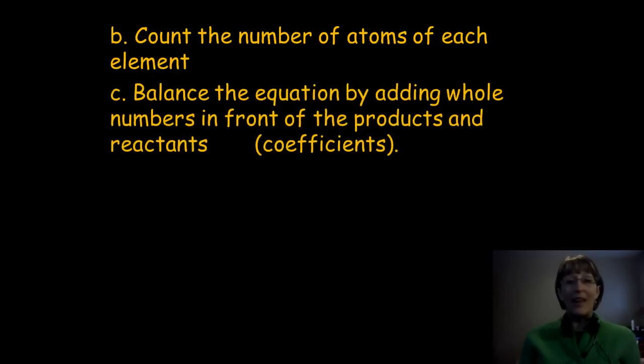Balance the equation by adding whole numbers in front of the products and reactants. You balance the equation by adding the big coefficients in front of the formula. Don't ever balance your equation by writing down or changing the little subscripts. You know, H2O is always H2O, that law of proportions, where there are always two H's for every one O in water. That's that proportion for water. If you mess up those coefficients, you no longer have water. I'm sorry. If you mess up those little subscripts, you no longer have water.